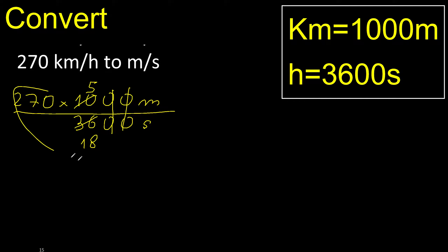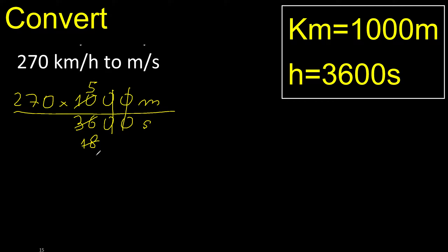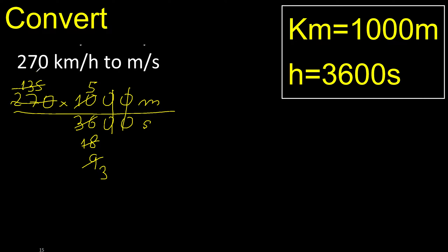Can be simplified, can be divided by 2. Divided by 2 is 9. Divided by 2. Can be divided by 3. Divided by 3 is 3. Divided by 3.